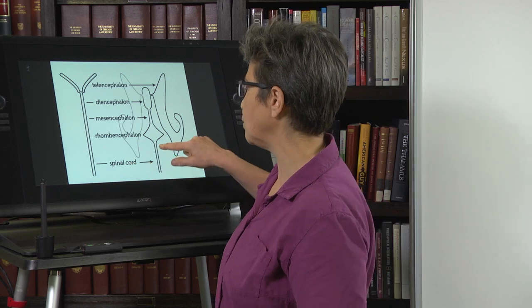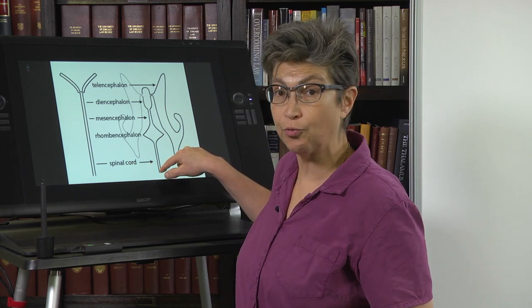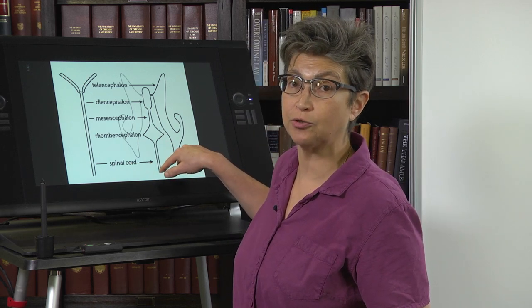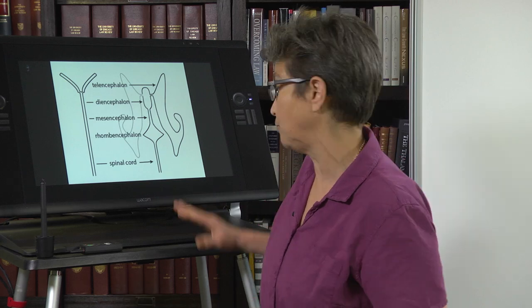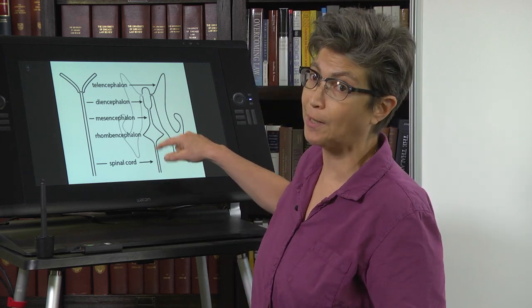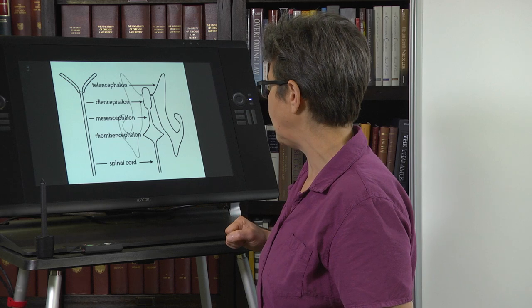In the spinal cord, there is a lumen or ventricle called the central canal. In the human, however, it is clogged up with ependymal cells — it is not patent, there is nothing flowing. There is nothing truly lumen-like about this central canal.